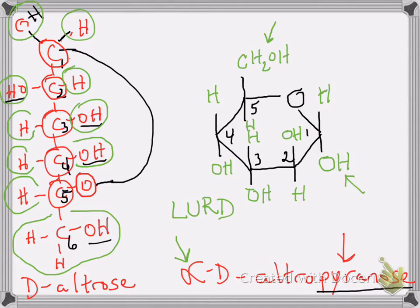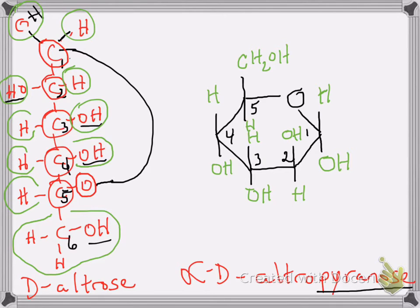We have now correctly drawn our structure. This is alpha-D-altropyranose: alpha because we're in the alpha form, D because we started with D-altrose, and pyranose because it's a six-membered ring. There is the proper structure for alpha-D-altropyranose.